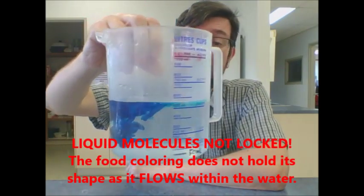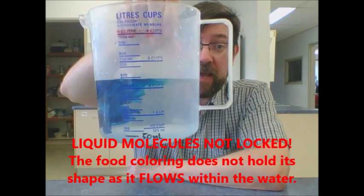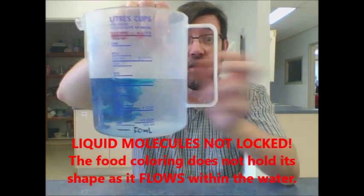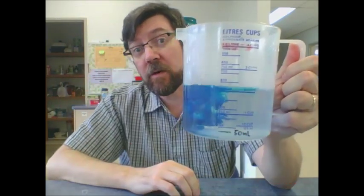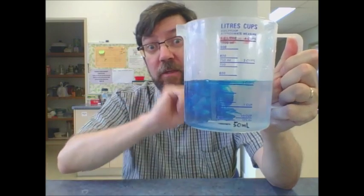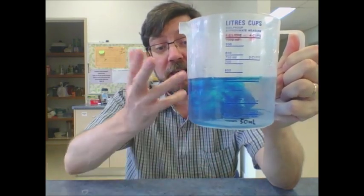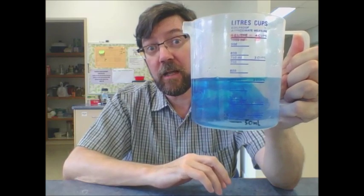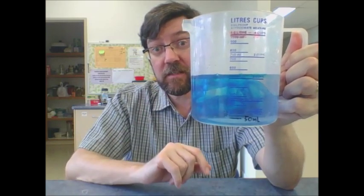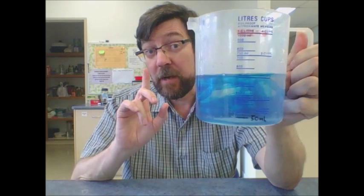It is not staying in one spot. It is swirling about. It is changing its position. This is because the molecules of water in the container are actually constantly changing position, and as they move around amongst each other, they are taking the blue food coloring with them. So, this is a very good example of how molecules in a liquid are not locked in place.